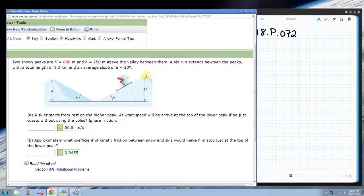So we say the skier starts from rest on the highest peak. At what speed will he arrive at the top of the lower peak if he just coasts without using the poles? Ignore friction.